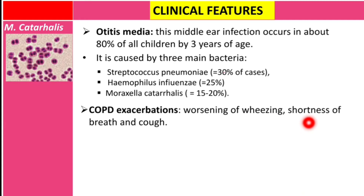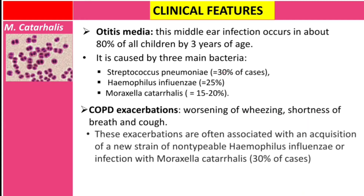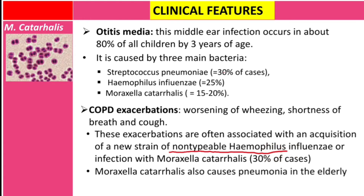The second condition is exacerbation of COPD — the worsening of wheezing, shortness of breath, dyspnea, and coughing. These exacerbations are often associated with acquisition of a new strain of non-typeable Haemophilus influenzae or an infection with Moraxella catarrhalis, occurring in about 30 percent of cases. Moraxella catarrhalis also causes pneumonia in the elderly.